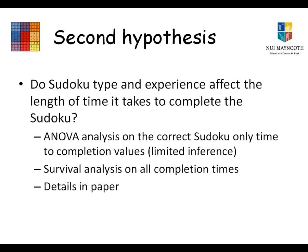The second hypothesis is whether Sudoku type and experience affect the length of time to complete the Sudoku. There are a few ways to address this. First, you might do an analysis of variance on the correct Sudoku only times — though this has limited inference since you're restricting the dataset to only those who got it correct, which should be pointed out. Second, you might use survival analysis on all completion times. The details are in the paper, but we found a strong effect of Sudoku type on the length of time to completion using both approaches.